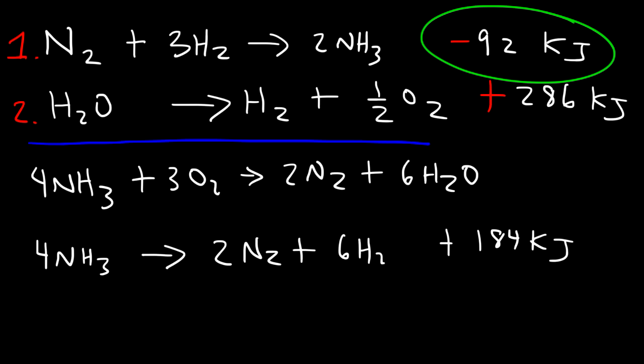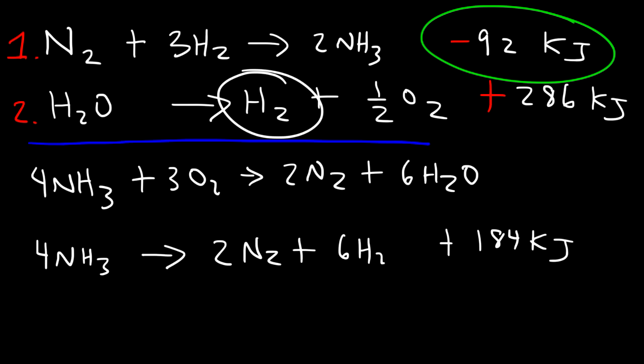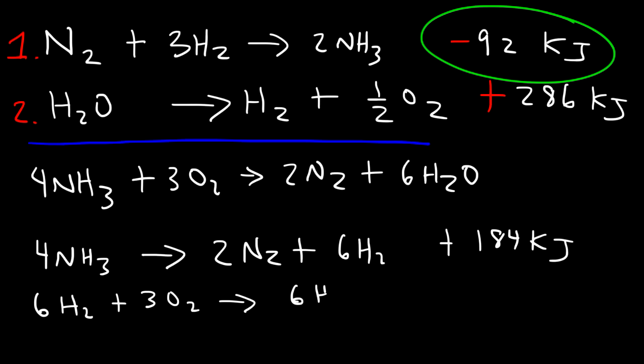Now for equation 2, we focus on H₂O since H₂ appears in both equations. In the net reaction we need six water molecules on the right, but here we only have one on the left, so we reverse it and multiply by 6. That gives: 6 H₂ + 3 O₂ → 6 H₂O. Changing the sign and multiplying: ΔH = -286 × 6 = -1716 kJ.